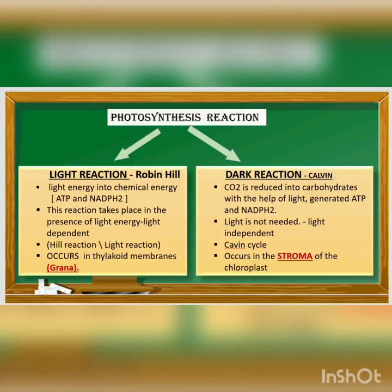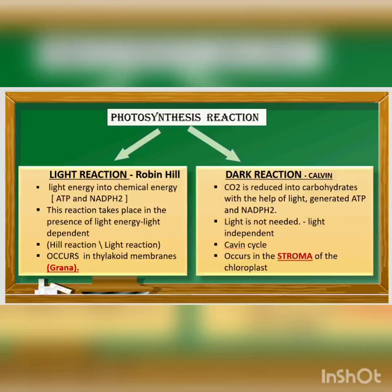The photosynthetic reaction is divided into light reaction and dark reaction. The light reaction was described by Robin Hill, so it is also called the Hill reaction. It takes place in the presence of light and is light-dependent. This reaction occurs in the thylakoid membrane of the grana of the chloroplast. In the light reaction, light energy is converted into chemical energy, and as a result ATP and NADPH₂ are formed.